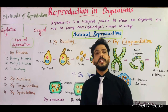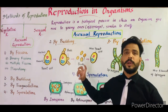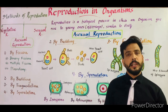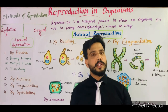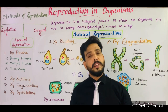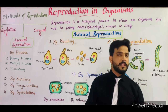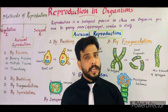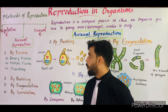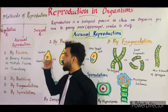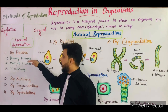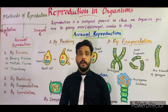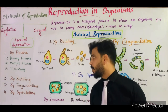In that lecture I told you about the definition of reproduction, the different modes of reproduction such as vegetative reproduction, asexual, and sexual reproduction, and one important type of asexual reproduction — binary fission, multiple fission, and plasmatomy.